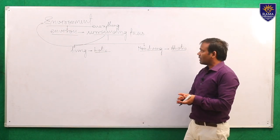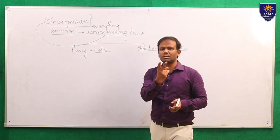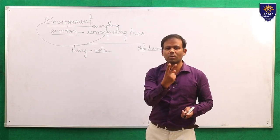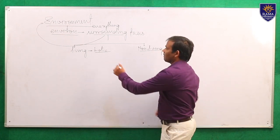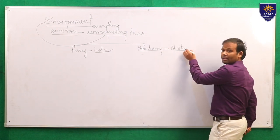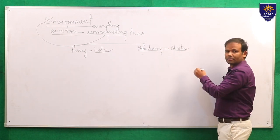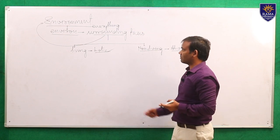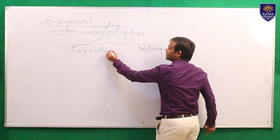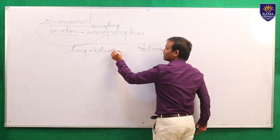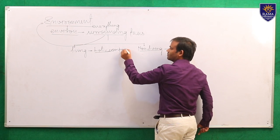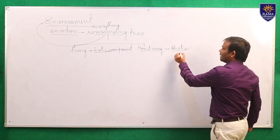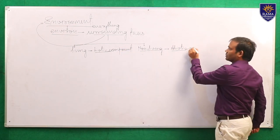Whatever the things are present in our surrounding, they are classified into two major groups — either they are living or they are non-living. The living ones are known as biotic and the non-living ones are known as abiotic. So here we can say that environment has two components: biotic and abiotic.